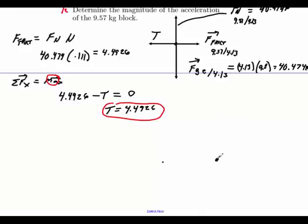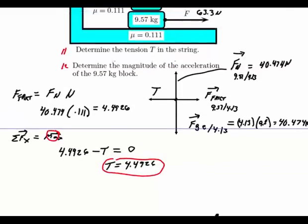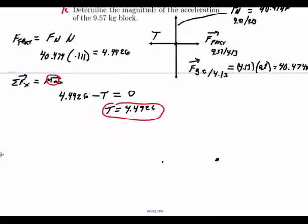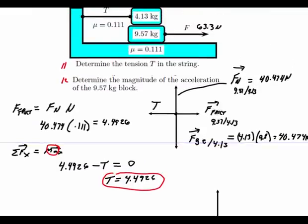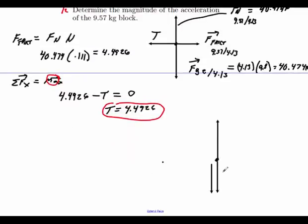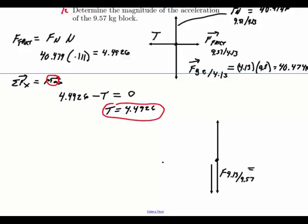I'll come over here and draw it. Alright, so first thing I'm going to do is I'm going to have two forces coming down. I'll talk about what those are going to be. First thing is I had the force normal here of the 9.57 pushing on to the 4.13. So here I'll have the force at the 4.13 is pushing on to the 9.57.